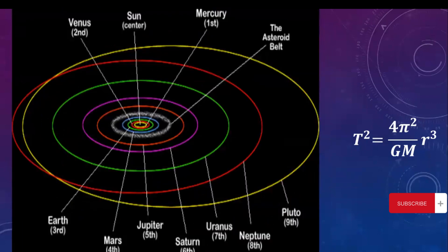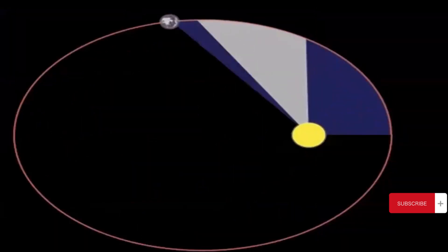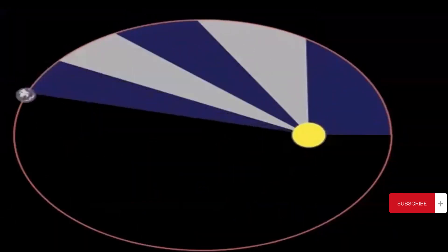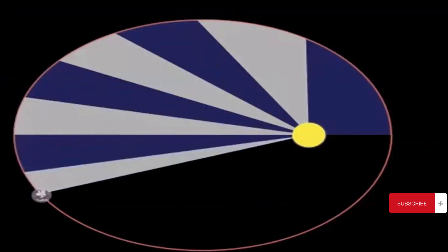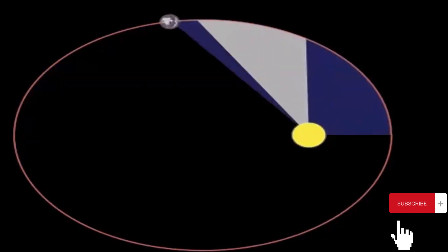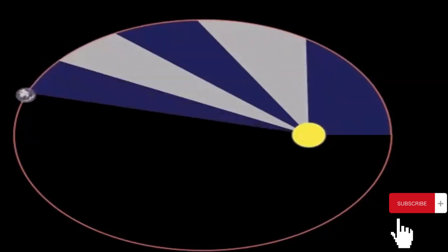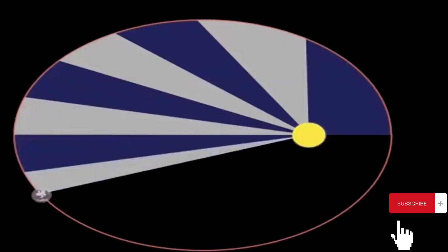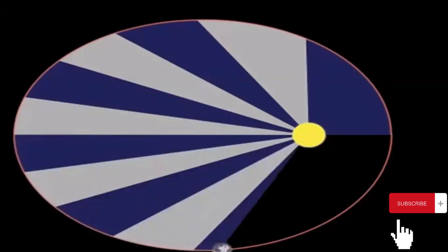The speed variation explains why planets move more rapidly when near the sun in elliptical orbits, allowing them to cover the same arc length in less time. Kepler's second law further refined our understanding of planetary motion and highlighted the dynamic nature of celestial orbits.